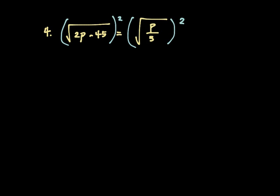And when I do that, whatever is inside comes out. So I have 2p minus 45 equals p divided by 3. Now I'm going to multiply both sides by 3 to eliminate this denominator.